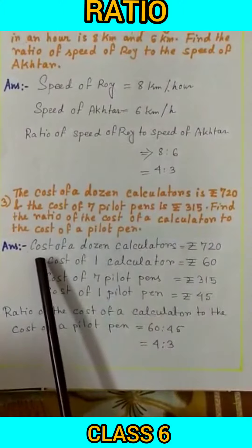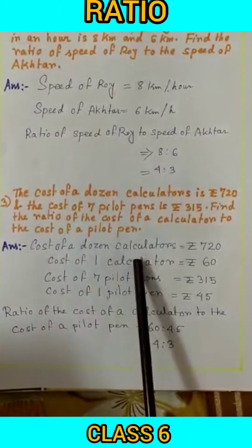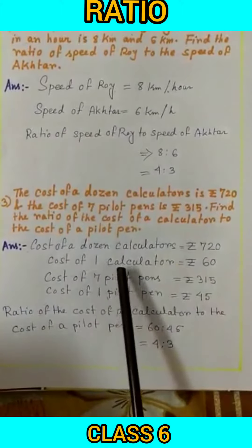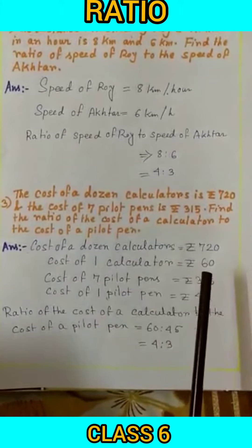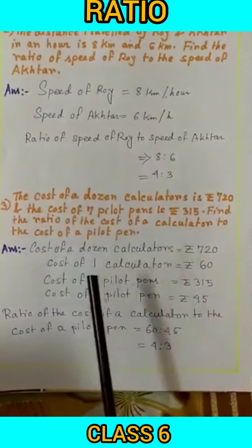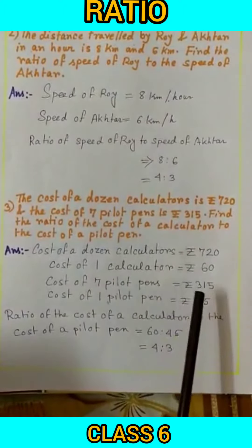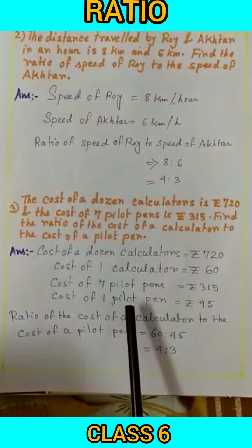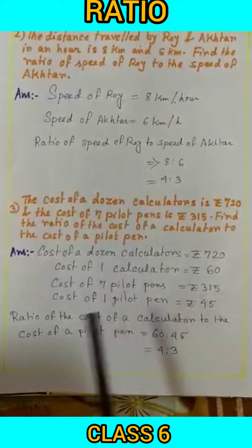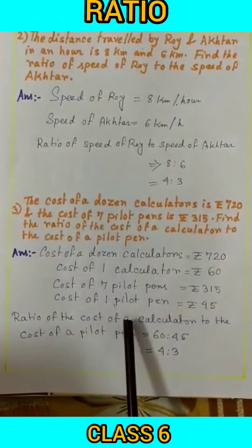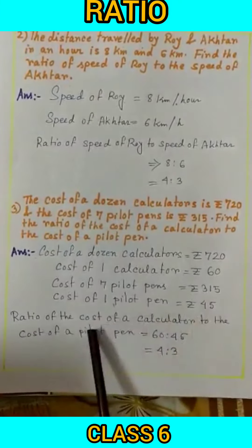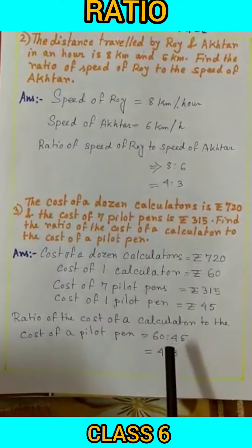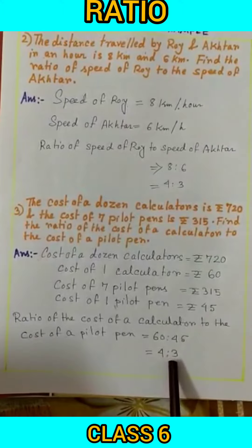So our solution is: cost of a dozen calculators is Rs. 720, cost of one calculator is Rs. 60, and cost of one pilot pen is Rs. 45. So ratio of the cost of a calculator to the cost of a pilot pen is Rs. 60 to Rs. 45, and our answer will be 4 to 3.